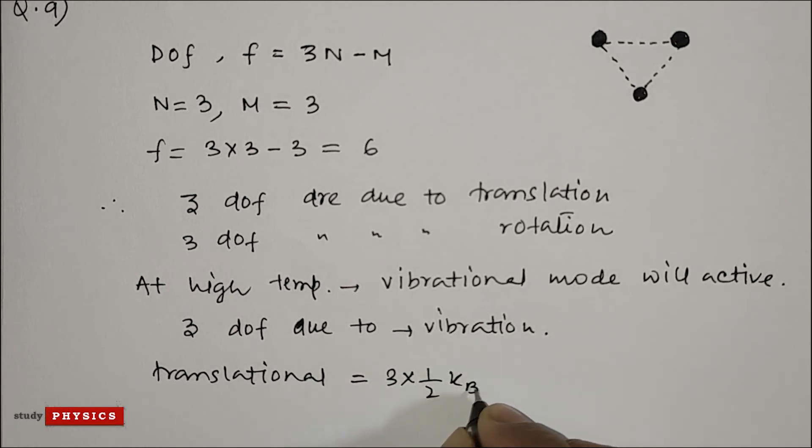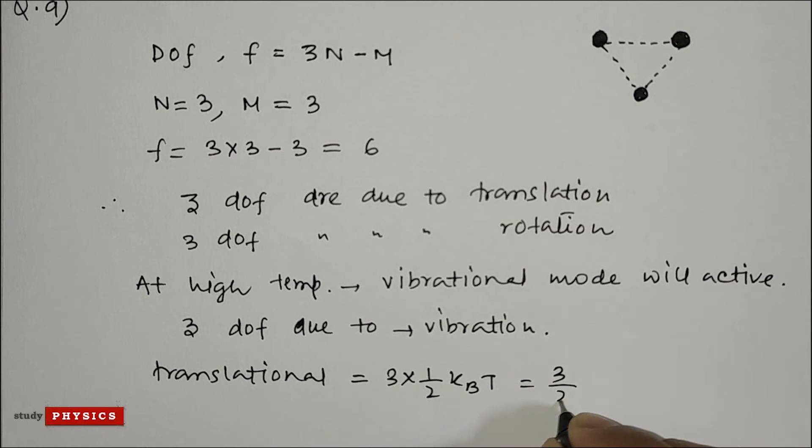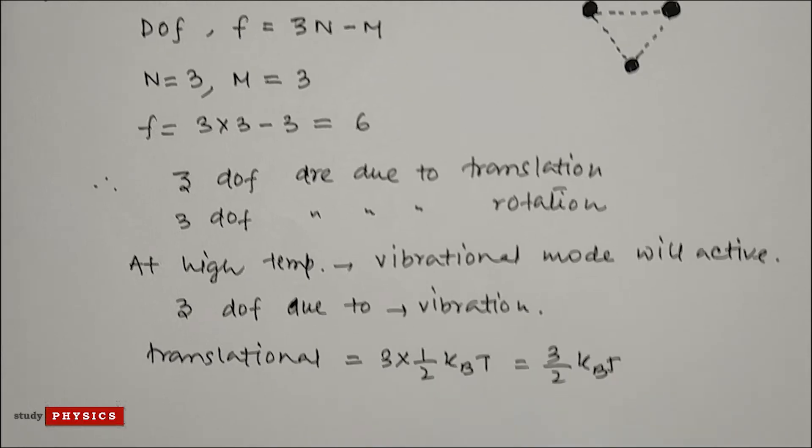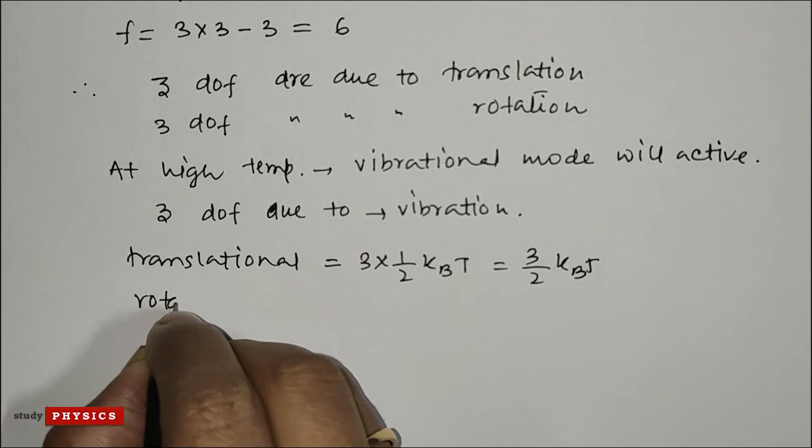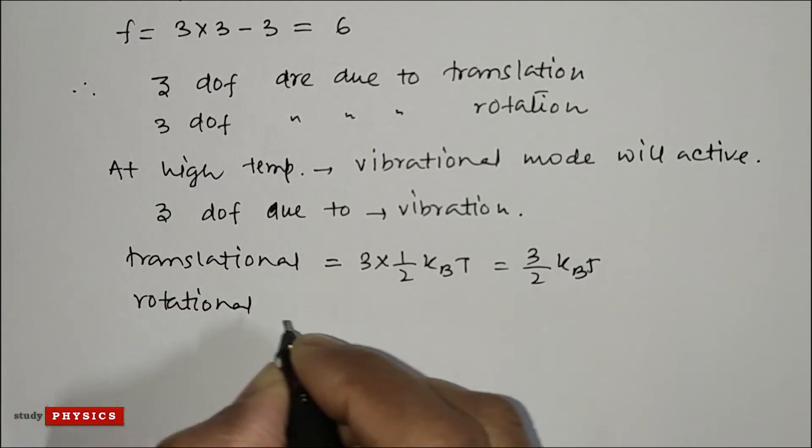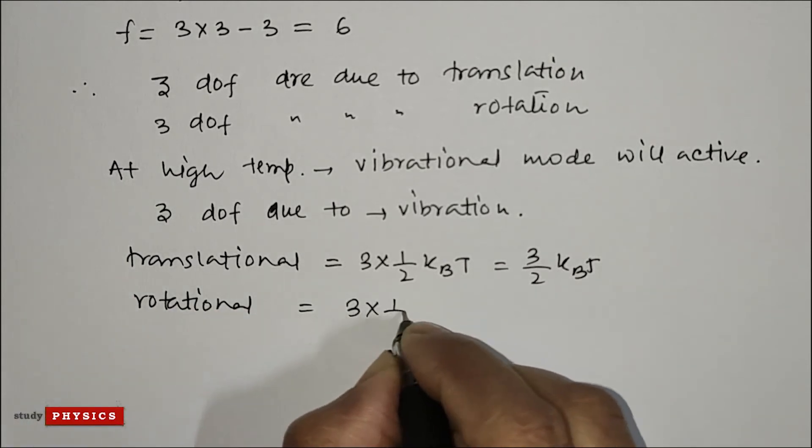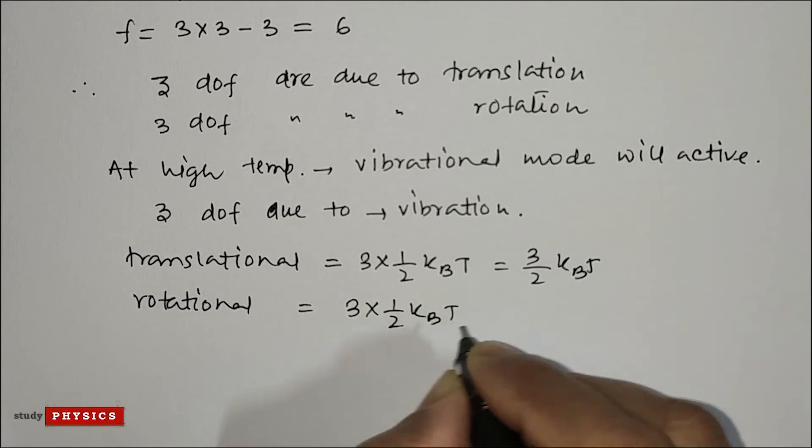...equals 3/2 k_B T. And for rotational, it's also 3 times half k_B T, which is 3/2 k_B T.